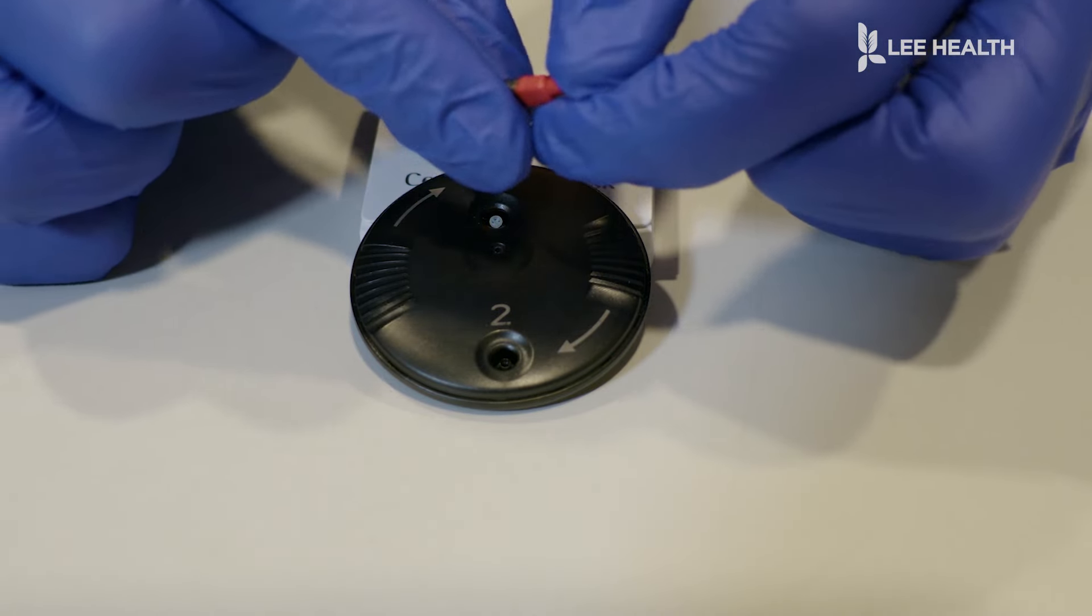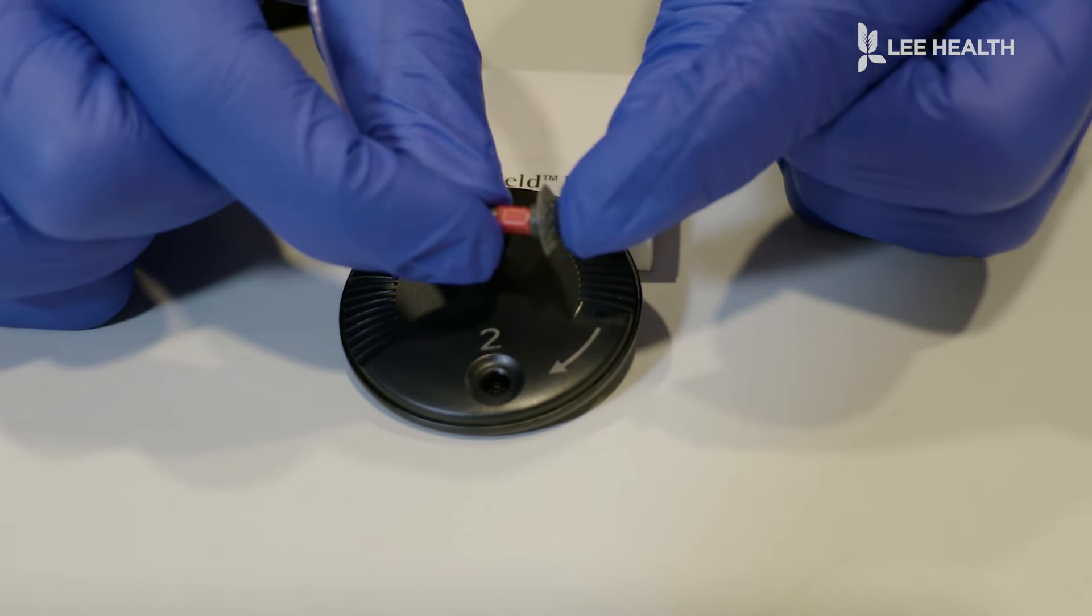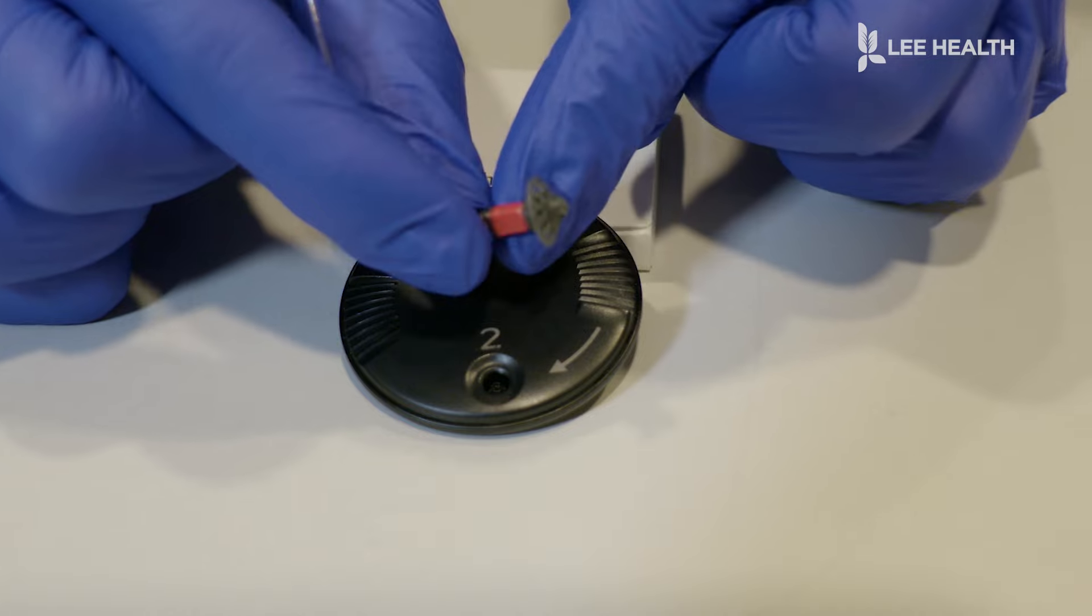We then just connect our dome piece back right underneath, really wiggling it, wiggling it on there nice and tight. And now that's all fresh and good to go.